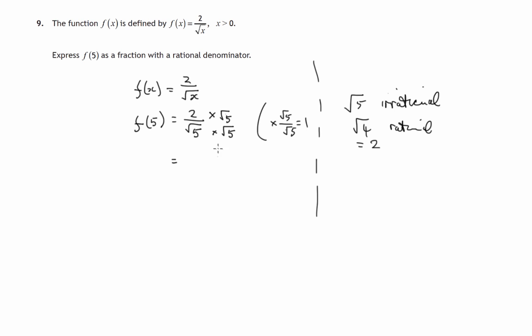Let's multiply the tops of these fractions: 2 times root 5. And in the bottom of the fractions, root 5 times root 5.